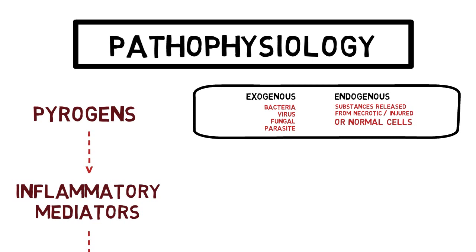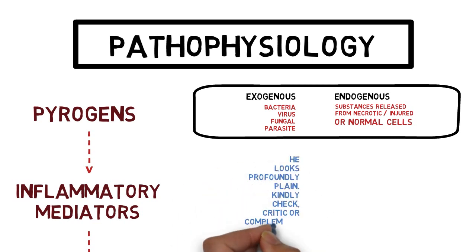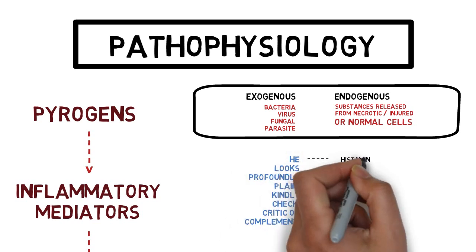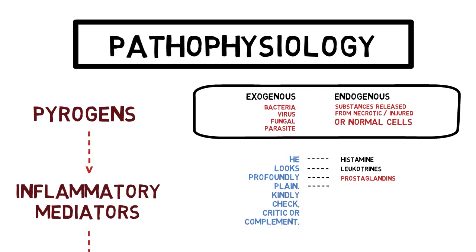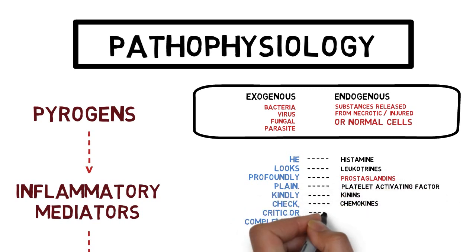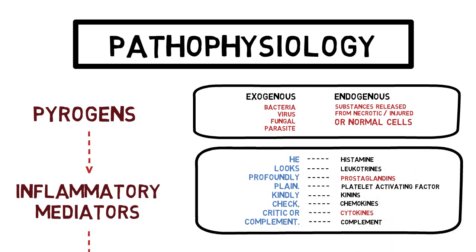These stimuli initiate the release of inflammatory mediators. Robin's Pathology highlights eight of them: histamine, leukotrienes, prostaglandin, platelet activating factor, kinins, chemokines, cytokines and complement factors. Pyrogens specifically initiate the release of prostaglandins and cytokines — the ones responsible for fever — which cause the hypothalamus, acting as the body's thermostat, to readjust body temperature to a higher degree.